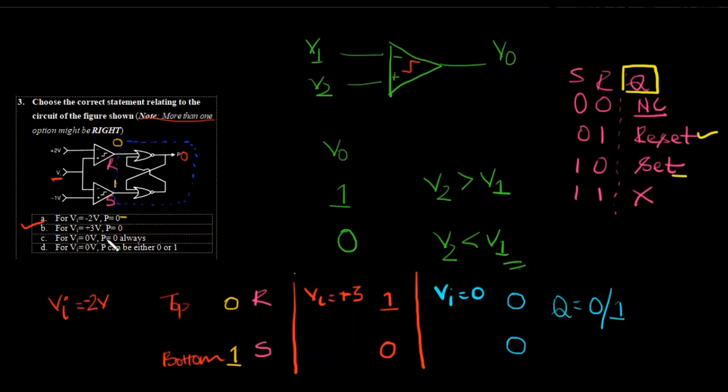The third option is ruled out because P equals 0 is the only valid option from the analysis.